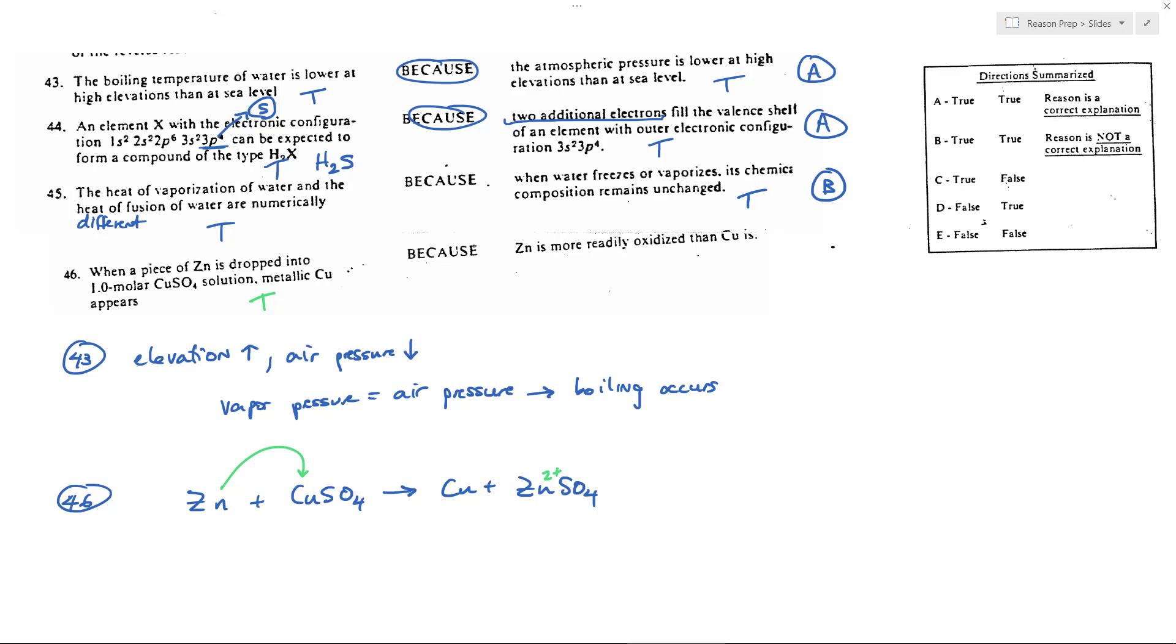So that's true - zinc is more readily oxidized than copper. That's another way of saying it's more active. And so again we get a true true CE because the fact that it's more readily oxidized is why this is going to come in, be oxidized, and then reduce copper in the process, because zinc would much rather be oxidized in this scenario than copper. So we get true true, this is a CE, and so again we get choice A.